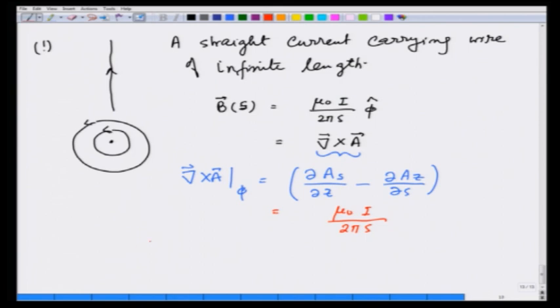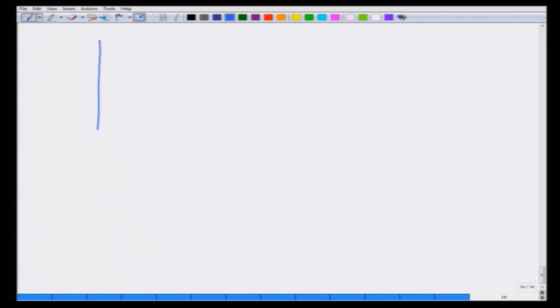This immediately suggests that I can take A_s to be 0 and A_z to be mu naught i over 2 pi log s with a minus sign in front. You can immediately see this gives me the right answer for B. I can also choose A_phi to be 0, and therefore I can write in this case of an infinitely long current carrying wire, A vector to be minus mu naught i over 2 pi log s in the z direction.